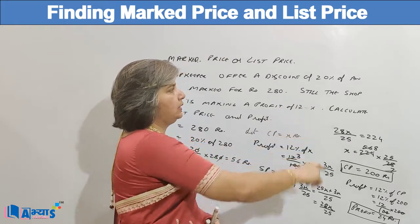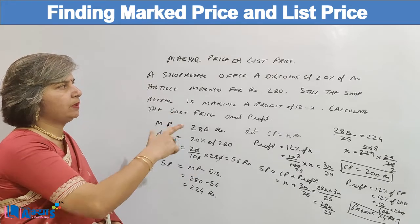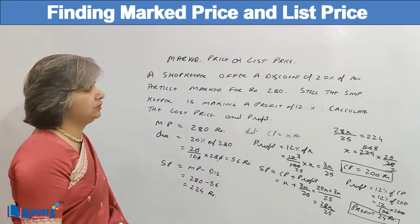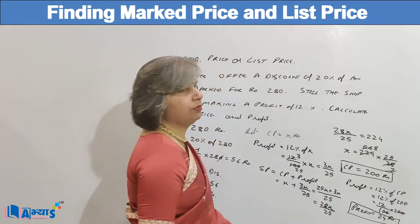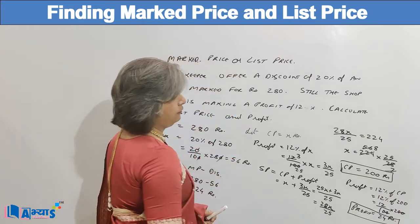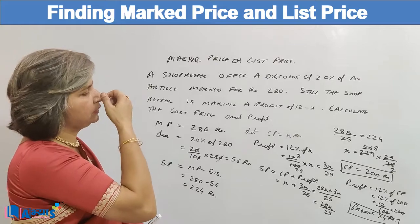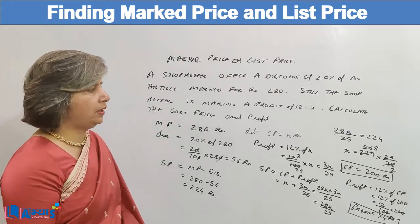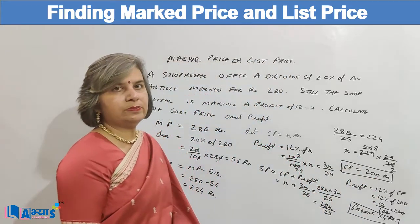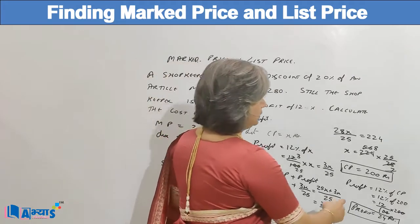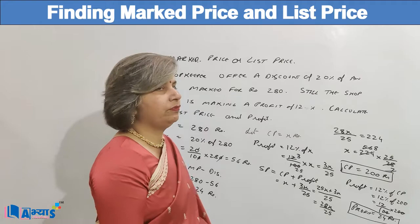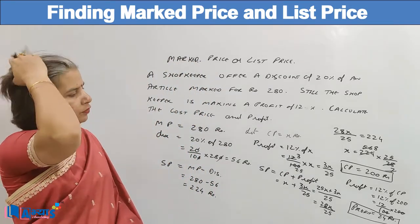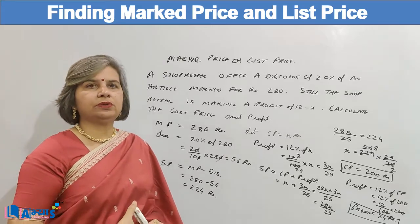In the second part, it was given that the shopkeeper is making a profit of 12%. We assumed the cost price to be X, and the profit was 12% of X, calculated as 3X/25. The selling price was cost price plus profit: X + 3X/25 = 28X/25. Equating this to Rs. 224, we got the cost price X as Rs. 200. The profit, which is always calculated on the cost price, is 12% of Rs. 200, giving Rs. 24.